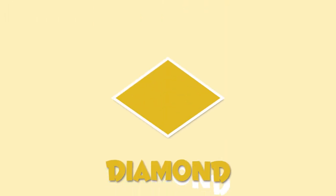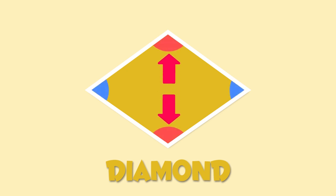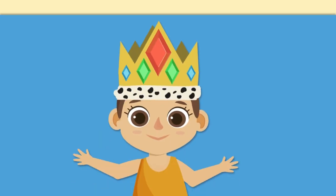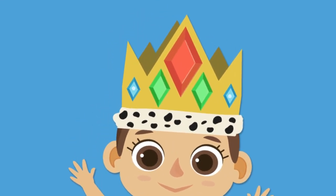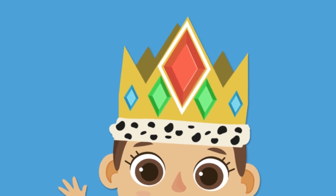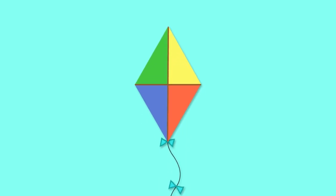This is a diamond shape. Its four sides are identical, but its angles are not — this one and this one are equal, and so are these two. A diamond looks like the jewel on this crown, or like this kite.